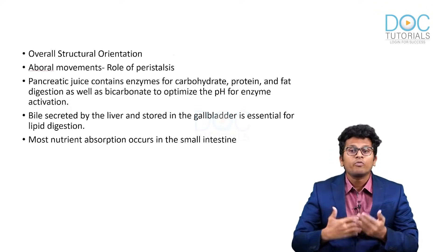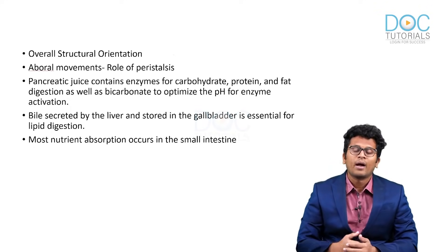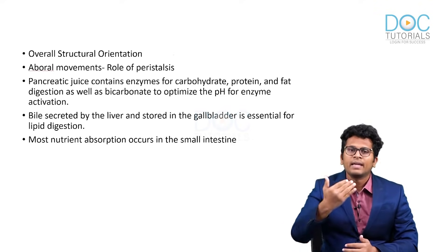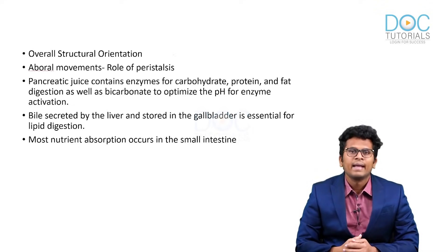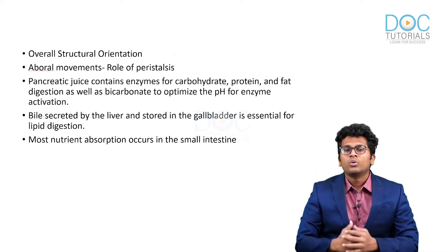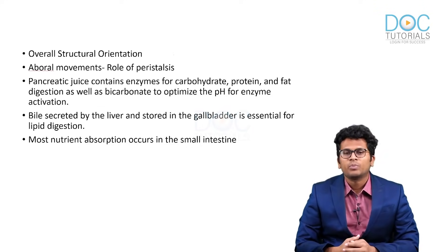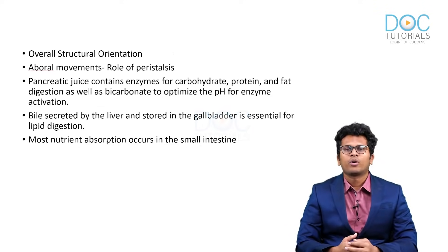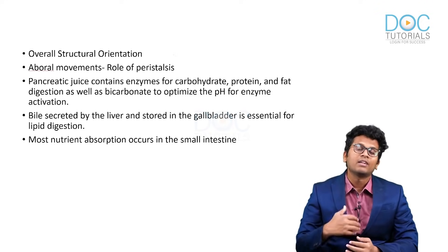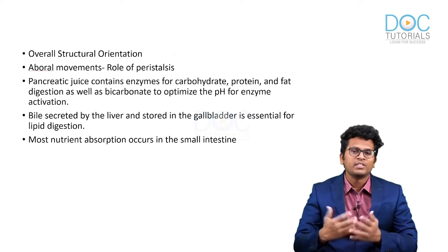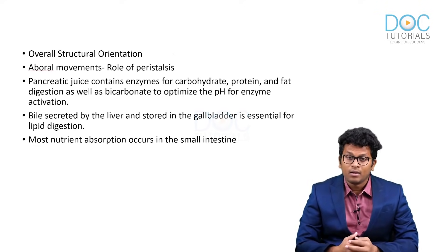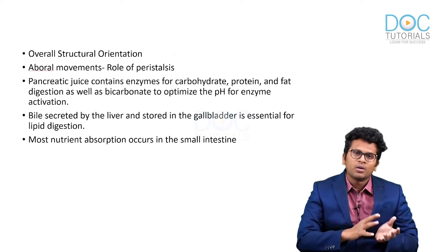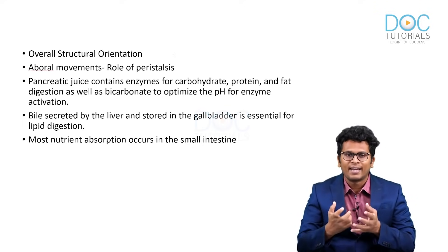Peristalsis also plays a major role, and most of the time it occurs in a proximal to distal direction. The pancreatic juices contain enzymes for carbohydrate, protein, and fat digestion, as well as bicarbonates to optimize the pH for enzyme activation. Bile is also quite important — it is secreted by the liver, stored in the gallbladder, and is essential for fat digestion.